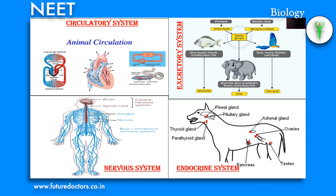Excretory system: excretion occurs in different ways in different organisms. First is aminotelic — the excretory product is amino acids. Example: starfish. Ammonotelic means the excretory product is ammonia — examples: most invertebrates and some molluscs. Ureotelic means the excretory product is urea — examples: cartilaginous fishes, snail, prawn, mammals and aquatic reptiles.